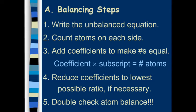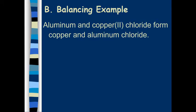We are going to add coefficients to make the number of atoms on each side equal. And you have to remember that the coefficient times the subscript, which is the small number on bottom, is the total number of atoms. We'll talk about that in a minute. You're going to reduce coefficients to the lowest possible ratio if necessary. That won't be necessary too often. And double check that you have the correct number of atoms on both sides.